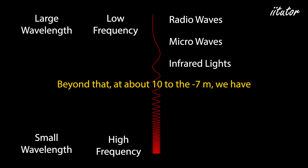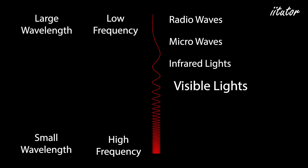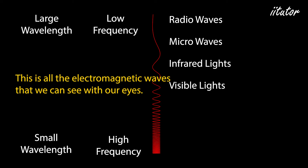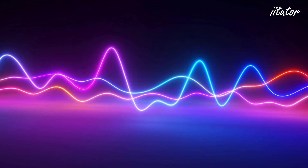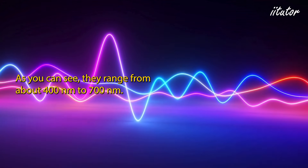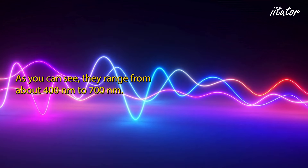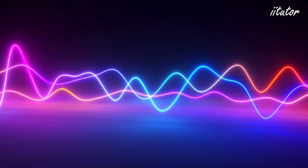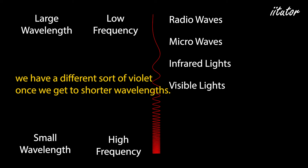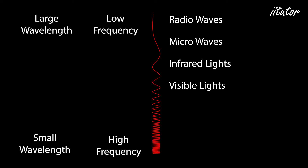Beyond that, at about 10⁻⁷ meters, we have visible light — all the electromagnetic waves we can see with our eyes, ranging from about 400 to 700 nanometers. Just as we had infrared before red, once we get to shorter wavelengths than violet we have ultraviolet.